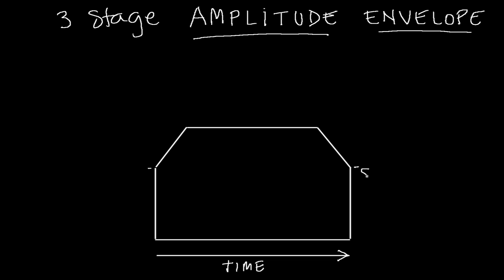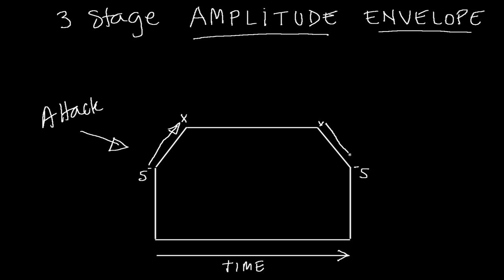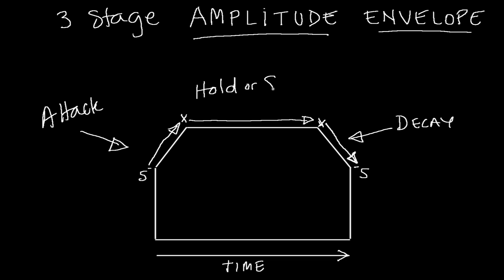Now we've got a three-stage amplitude envelope with loudness, volume, or amplitude. Here and here is still silence. This angle coming up — the steepness of this angle — still tells us how long it takes the sound to rise up from silence to its loudest peak — that is still the attack. And this angle at the end still tells us how long it takes to come back down again to silence — that is still the decay. But now we have this middle stage, which tells us how long the sound is held before it decays back down to silence — and this new part is called the hold or sustain.